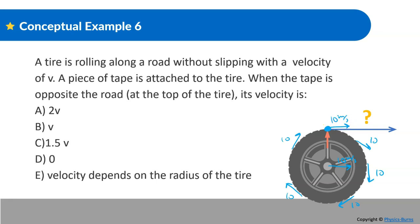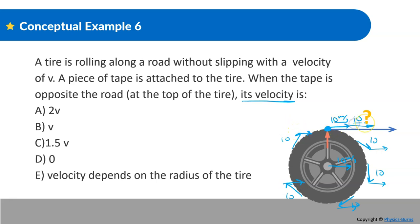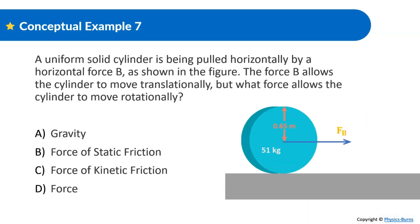However, when it's asking for its velocity, that means it wants us to combine the tangential velocity with the translational velocity. So it's going to be 10 plus 10. At the top, we're going to have two 10s going directly to the right, so the answer is 2V.